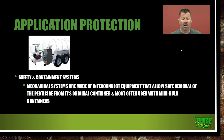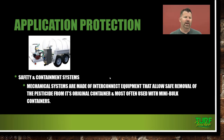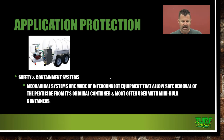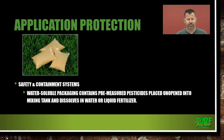Safety and containment systems — mechanical systems are made of interconnected equipment that allow the safe removal of pesticide from its original container and are most often used with mini-bulk containers. You can actually buy 50-gallon drums of certain pesticides, put them on a trailer set up, and connect hoses to it so you're not coming into direct contact having to pour the pesticide into the tank — it's a mechanical system that does that for you. It's a good way to do it that a lot of large agricultural settings use.